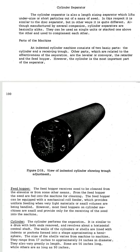The parts of the machine: an indented cylinder machine consists of two basic parts. First is the cylinder and second is the receiving trough. Other parts in this machine which are related to the effectiveness of the separation are the leveler or conveyor, retarder, and feed hopper. However, the cylinder is the most important part of the separator.